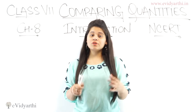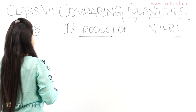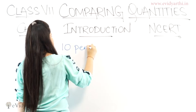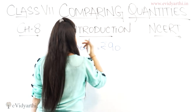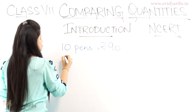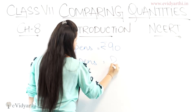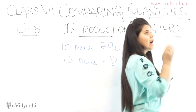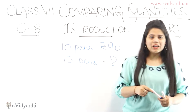Our next topic is based on the types of questions that come. Let's suppose a question says: 10 pens cost 90 rupees. What is given? 10 pens cost 90 rupees. And you are asked: find the cost of 15 pens. Now you know 10 pens cost this much, so you need to find the cost of 15 pens. Going from 10 to 15 is not that easy directly. But if I tell you the cost of 1 pen, then can you find the cost of 15 pens?